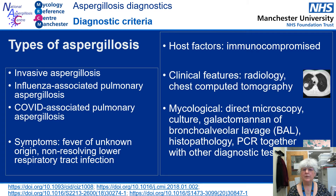A number of guidelines have been developed over the last 20 years to help diagnose the different forms of aspergillosis. The guidelines were developed by research scientists, clinicians, and experts to help define important criteria for the three different diseases. The criteria are based on host or patient factors, clinical features, and mycological evidence. Host factors define whether the patient is immunocompromised or not, which makes a big difference to how the patient responds to treatment. Clinical features define the state of the lungs based on radiological findings — X-rays or CT scans. Mycological evidence describes the number and types of tests used to analyze specimens to determine the cause of infection.